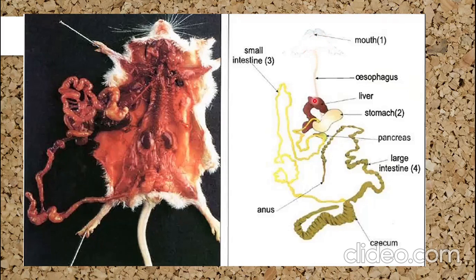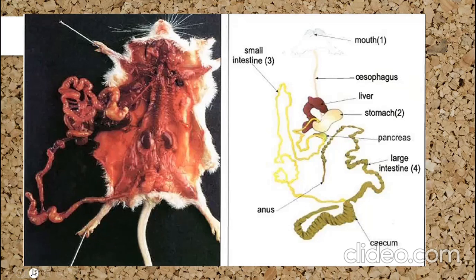We also have the liver, which gives juices. Additionally, we have glands in the stomach and glands in the small intestine. All of these glands give juices that mix with the food, so the food will not be dry and will be easy to digest. The undigested food will go outside the body through the anus.